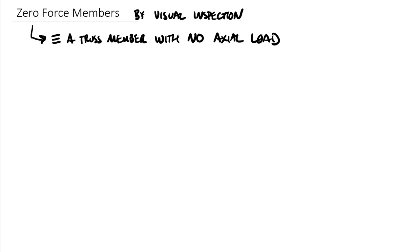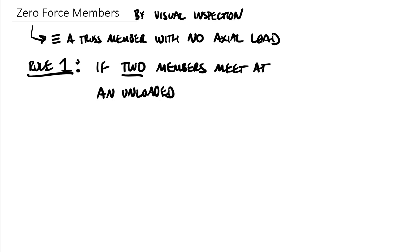So we have two different rules to find zero force members starting with rule number one. And rule number one has to do with two members meeting an unloaded joint. Okay so if two members meet at an unloaded joint point, then both are zero force members.